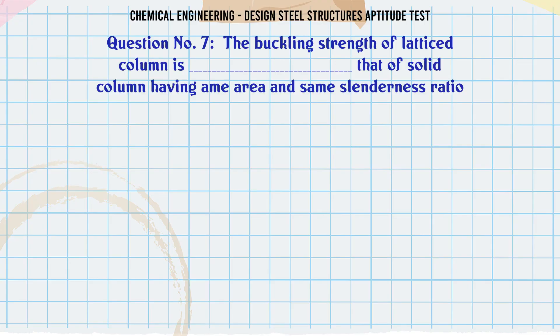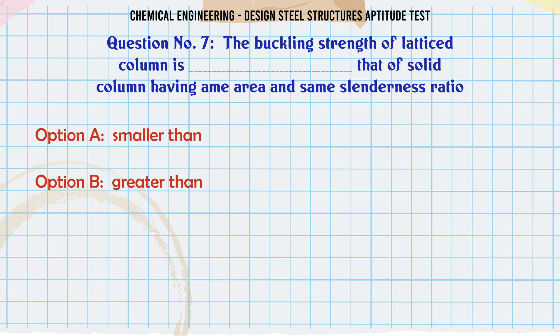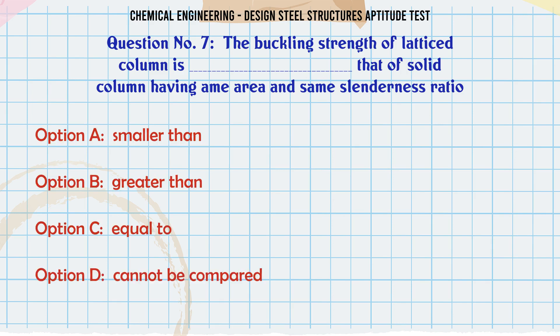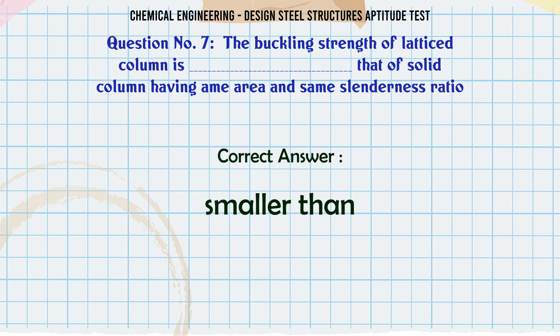The buckling strength of lattice column is that of solid column having same area and same slenderness ratio. A. Smaller than. B. Greater than. C. Equal to. D. Cannot be compared. The correct answer is: Smaller than.